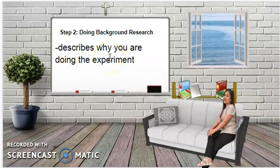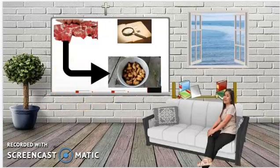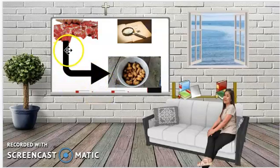Step two of the scientific method is doing background research. It describes why you are doing the experiment. At that time, people believed that organisms suddenly appeared from non-living matter — for example, that maggots come from meat. This idea was called spontaneous generation, where living matter was believed to come from non-living matter.